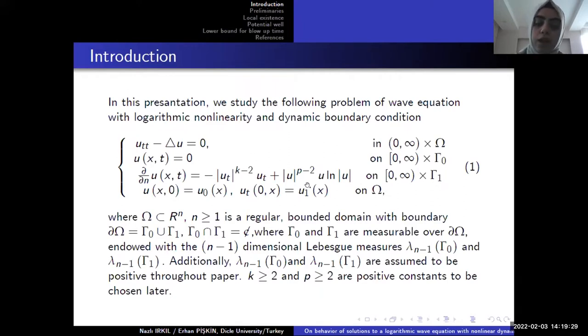We study this problem in a bounded domain. And we call this domain Omega. Omega is a regular domain. And the boundary of Omega domain can be called del Omega. And del Omega is defined with gamma 0 and gamma 1. And we give some conditions for gamma 0 and gamma 1.